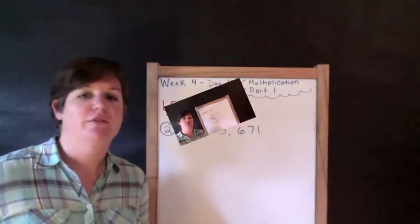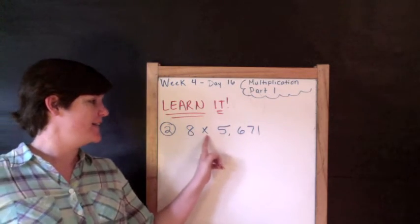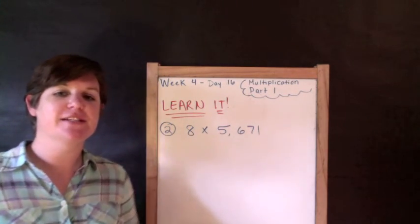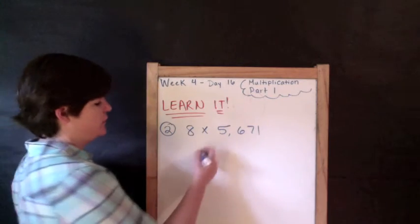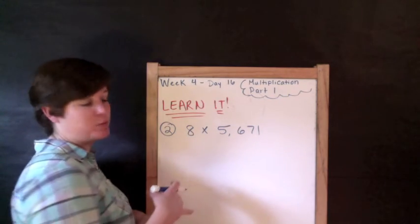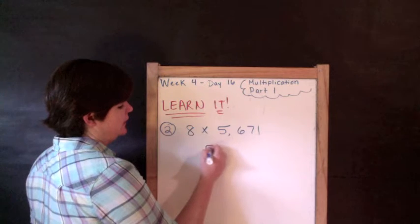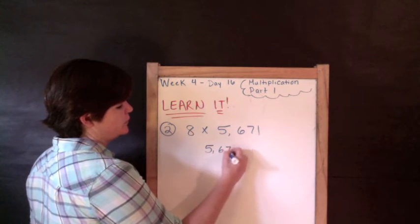Right. Example two: we've got 8 times 5,671. So the first thing I'm going to do is rewrite this problem, and I like to put the greater number on top. And you can do that because with multiplication, the commutative property of multiplication states that you can put the factors in any order and it will still come out to the same product.